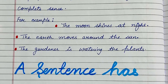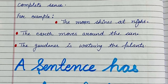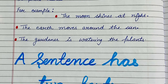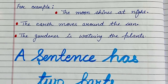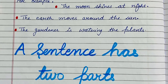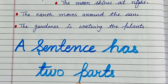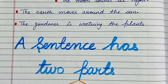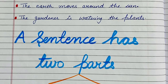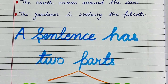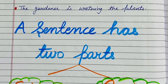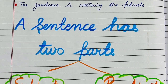A sentence is a group of words placed in proper order and it should have a complete sense. For example, 'The moon shines at night' — the moon is at the proper place as subject, then the verb is there, and then 'at night.' It conveys a proper meaning. 'The earth moves around the sun.' 'The gardener is watering the plants' — the gardener is the subject, is watering the verb, the plants the object. So these words must be placed in proper order so that you can convey proper sense.